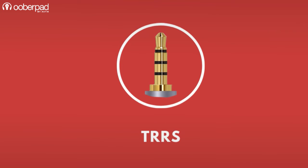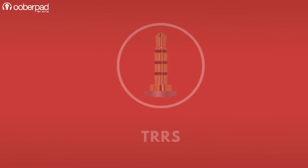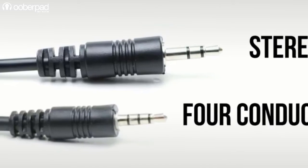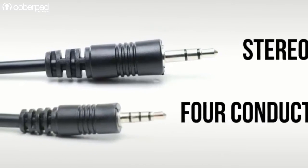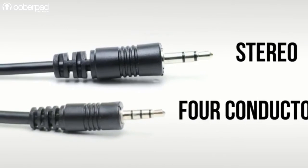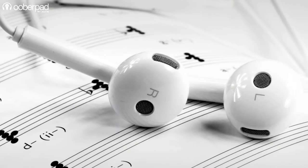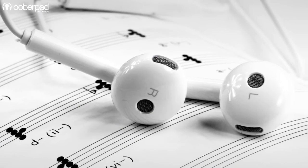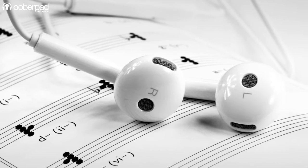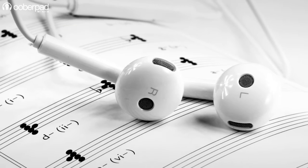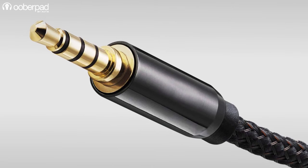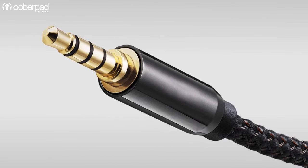On the other hand, TRRS stands for tip ring ring sleeve connector. Compared to the TRS connector, it has an extra ring on it. Hence it is known as TRRS. The left and right channels are covered along with a microphone channel when using a TRRS cable. The connector has four sections that allow devices to have four connections or channels.